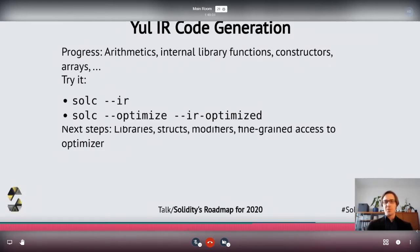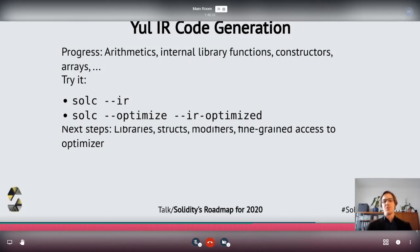As far as the Yul code generation in the Solidity compiler is concerned, we are pretty far ready. Early on I said 50%, but 50% of the features does not mean 50% of the smart contracts out there. So please try it out — you can try it with `solc --ir`, which shows you the originally generated intermediate code for the smart contract.